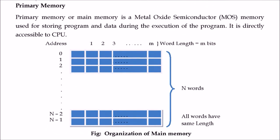Primary memory, also called main memory, is where the microprocessor deals with all its work. It understands only main memory and has nothing to do with secondary memory. Primary memory is a metal oxide memory used to store programs and data which are under execution — that means the microprocessor is working on it or is going to work on it.